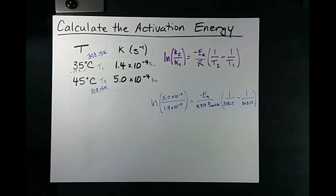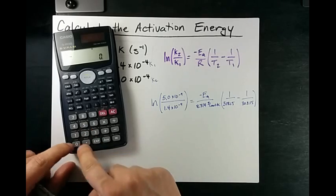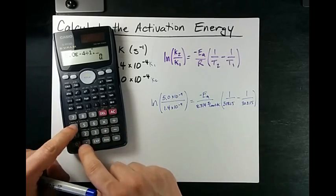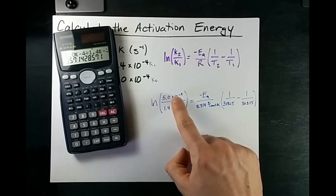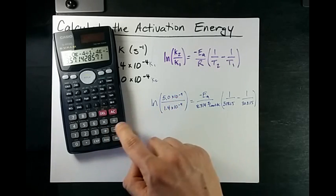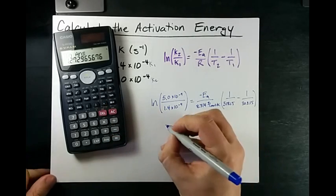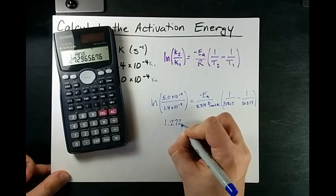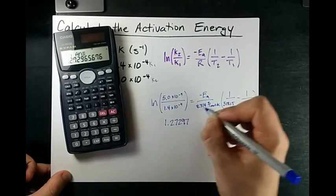At this point, there's a lot of math to do. So with the calculator, 5.0 times 10 to the negative 4 divided by 1.4 times 10 to the negative 4 is 3.57. Now I'm also going to take the natural log of that and I end up with 1.2729. I shouldn't have carried that many decimal places, but I did.